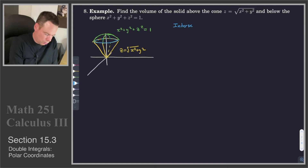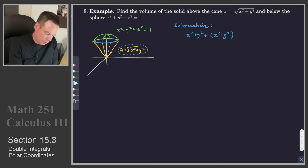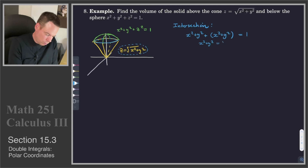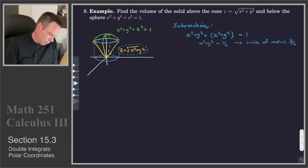Let's find the intersection of these two surfaces. At the intersection, we have x squared plus y squared plus z squared equals 1, and z squared can be written as x squared plus y squared from the cone equation. So this tells us that x squared plus y squared equals one-half — in other words, it's a circle of radius 1 over root 2. That's what the blue circle is in the diagram. We can bring it down into the plane: this is our circle of radius 1 over root 2, and that's the region we are going to integrate over.